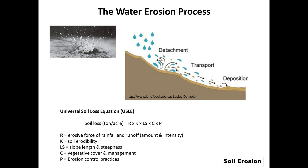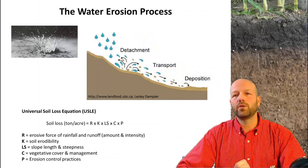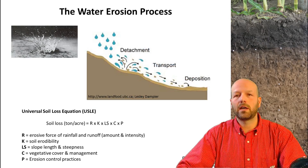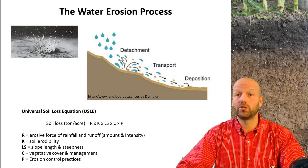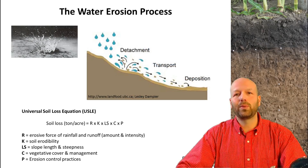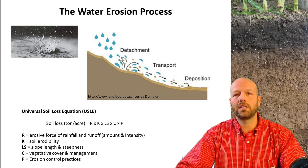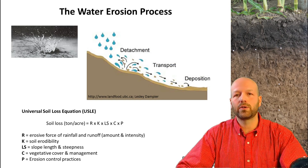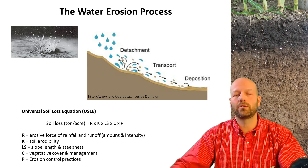K is the erodibility factor — how erodible your soil might be. L and S represent slope length and steepness. C is your cover and management — residue on the surface and what type of crops you're growing. P is your control practices. The USLE has been revised and is now called the Revised Universal Soil Loss Equation 2, which is more complicated, but this USLE concept helps us think about how we can manage soils to reduce erosion.